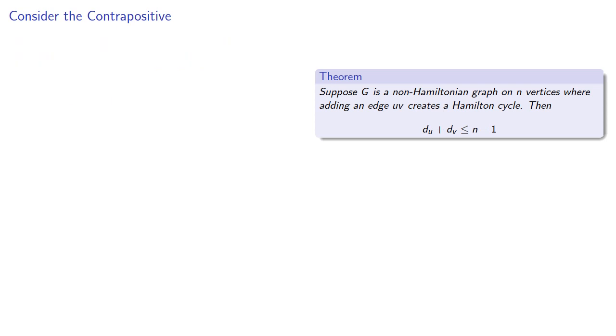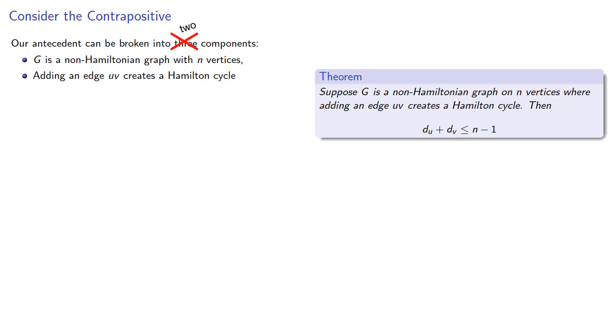So let's consider our theorem. Our antecedent can be broken into three components: G is a non-Hamiltonian graph with n vertices, and adding an edge creates a Hamilton cycle. And since we want to conclude that G is Hamiltonian, then we need to make this first part our antecedent, and the other part has to be part of our main premise.